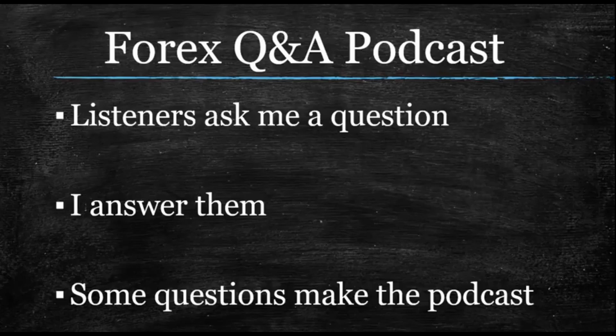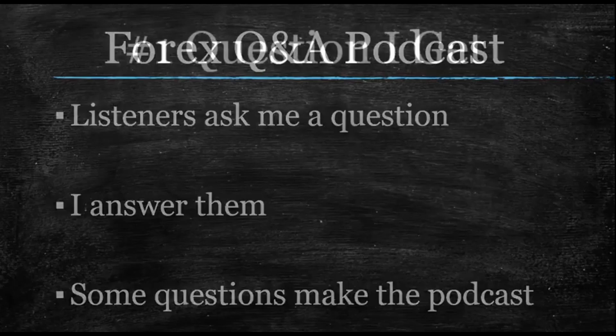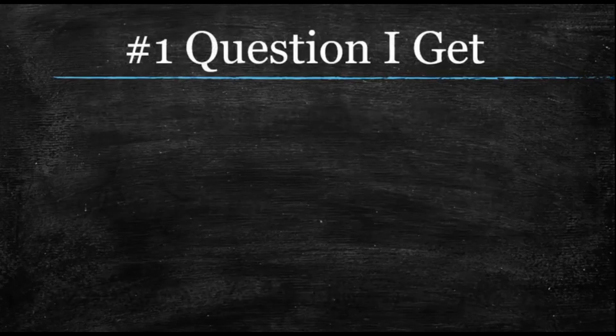The very first episode I made went over the top four questions I already get just out in public — acquaintances I meet when people discover what I do. That was so you wouldn't have to ask me those questions and could ask me something different instead. But what turned out happening once I opened this up for questions is the number one question I get — probably over 50% of the time — is about my algorithm.